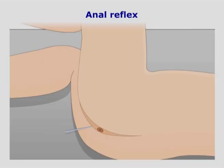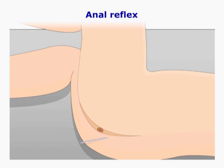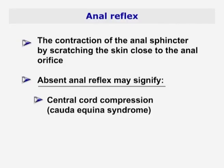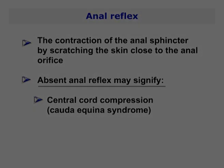This area is innervated by the lowest sacral segments, that is from S4 and S5. Central cord compression, or cauda equina syndrome, will cause an absent anal reflex.